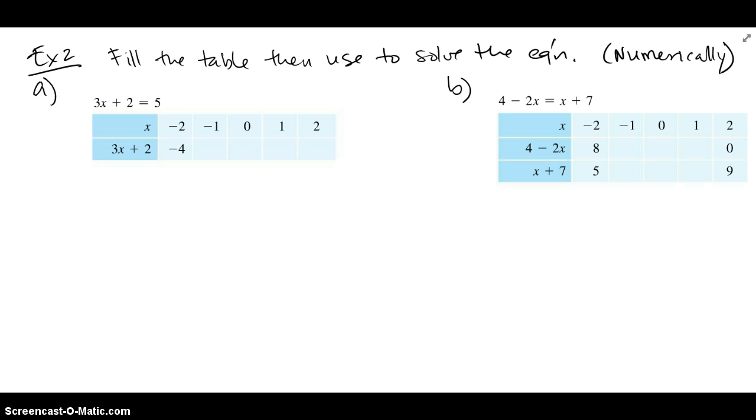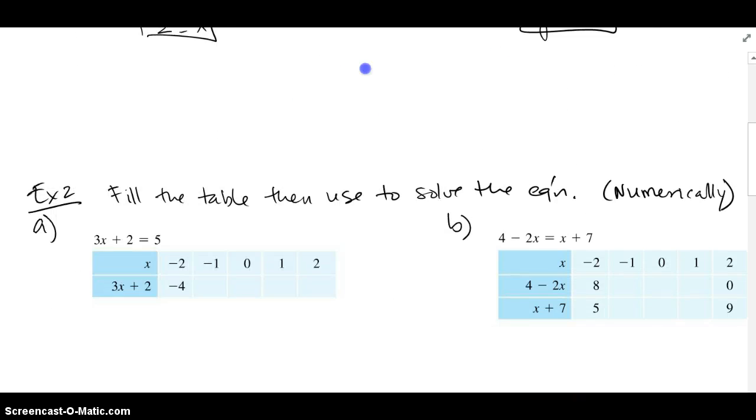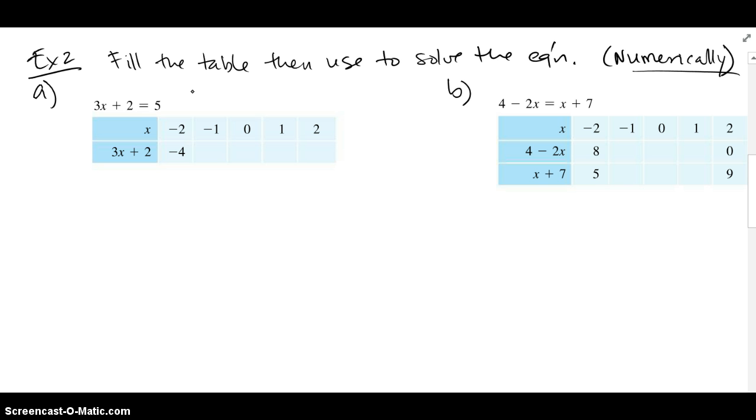Example 2 says, fill the table, then use it to solve the equation. And this is actually done numerically. Before, up here, when I did the algebra, it was done symbolically. Now, I'm going to solve this equation numerically. So it asks me to fill the table using this equation that's given right here. And we're only worried about the expression on the left, which is 3x+2. The first one's already done for us. If x is -2, 3x+2 is going to be -4. If x is -1, we're going to take -1 and put it in place of the x and see what it spits out, and it looks like it gives me a -1. We're going to do the same thing for the 0. If I plug in a 0, that's just going to spit out a 2. If I plug in a 1, that's 3 times 1 plus 2, which is 5. And if I plug in a 2, 3 times 2 is 6 and 2 is 8.